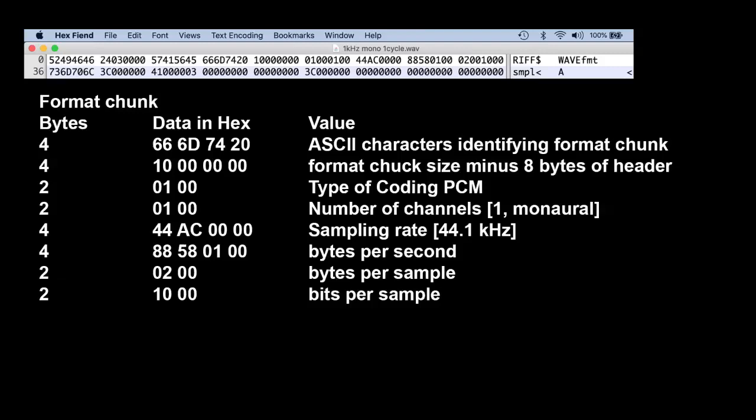The first four bytes are the ASCII numbers for format. The next four bytes indicate how many more bytes are in the format chunk. The next four bytes indicate PCM, pulse code modulation coding, and a monaural sound file. The next four bytes give the sample rate, in this case 44.1 kilohertz. The next four bytes indicate the bytes per second, and the last eight bytes indicate bytes per second and bits per second.